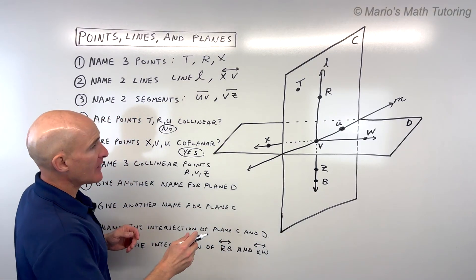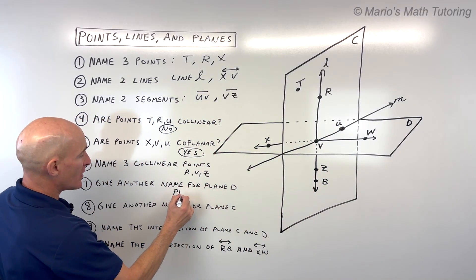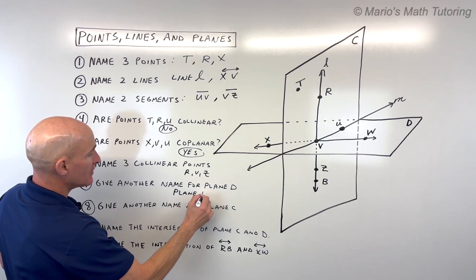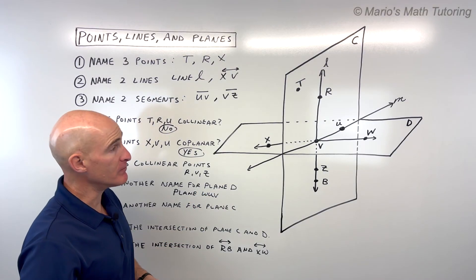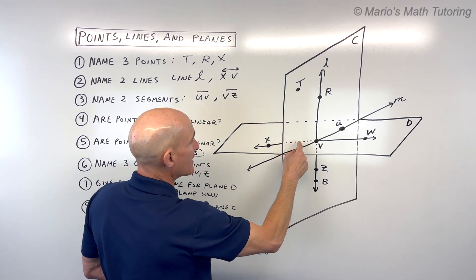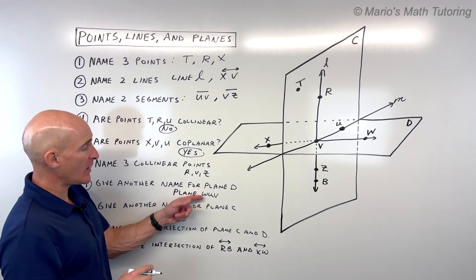When you pick three points that are not in a straight line, there's only one flat surface that will intersect or go through those three points. So another name for plane D, I could do WUV. You write plane, capital letters, W, U, V. Some students will mistakenly use four points. You just want to pick three.